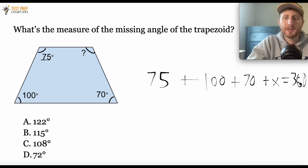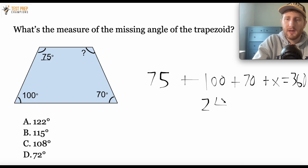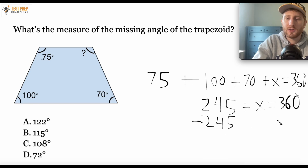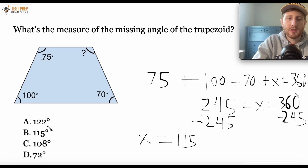Why did I write plus x? Because we don't know what that angle equals. So I'm going to do 75 plus 100 plus 70, which is 245. Rewriting this: 245 plus x equals 360. The name of the game here is to subtract 245 from both sides. When I do this, we see that x equals 115. So B is the correct answer.